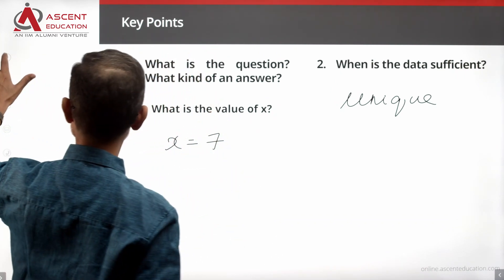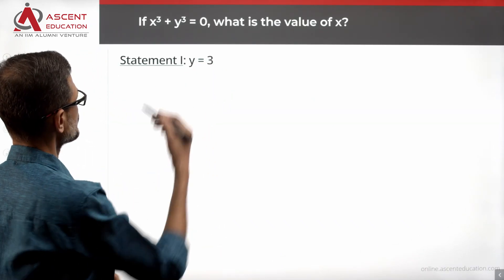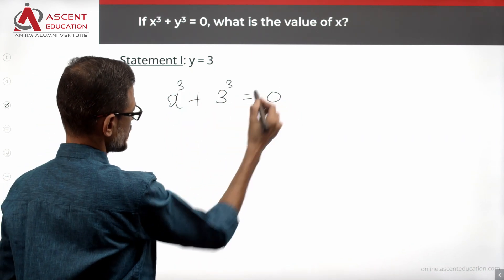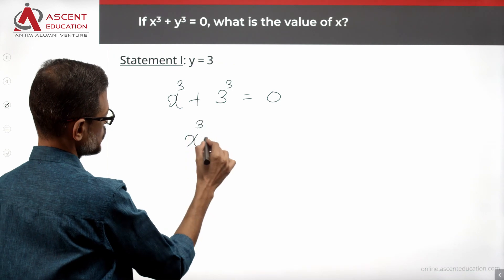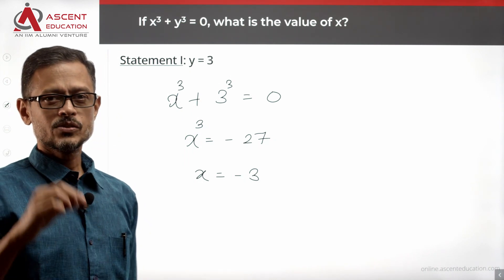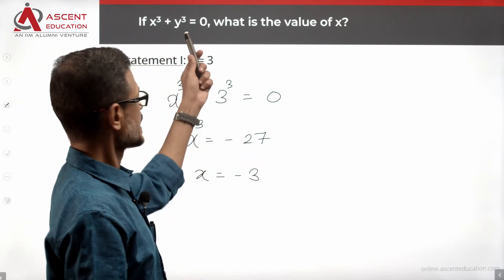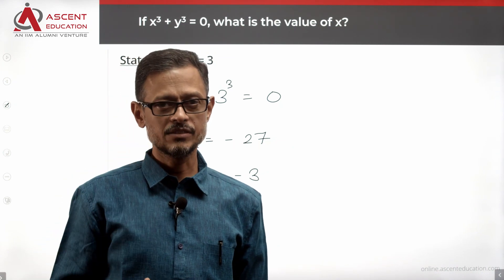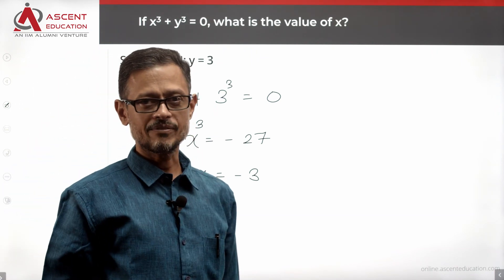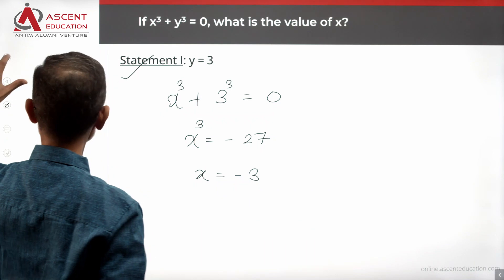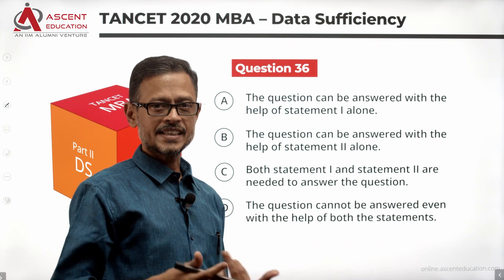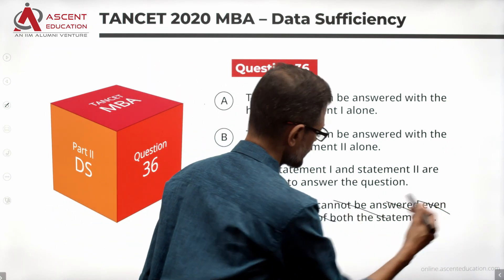Start by evaluating statement 1. What does statement 1 tell us? Statement 1 says y is equal to 3. So let's substitute: x cube plus 3 cube equals 0. 3 cube is 27, so x cube equals minus 27, which means the value of x is equal to minus 3. So the information in statement 1 gives x exactly one value, so statement 1 alone is sufficient to answer this question.